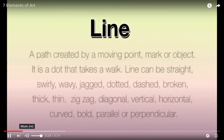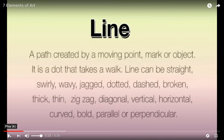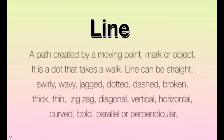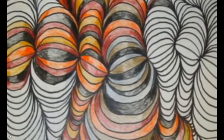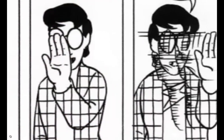Line. A path created by a moving point, mark, or object. It is a dot that takes a walk. Line can be straight, swirly, wavy, jagged, dotted, dashed, broken, thick, thin, zigzag, diagonal, vertical, horizontal, curved, bold, parallel, or perpendicular. And now it's going to show us some examples of these different lines. So as you look at your painting, see what kinds of lines you see in your painting, and then you will write about what you observe.